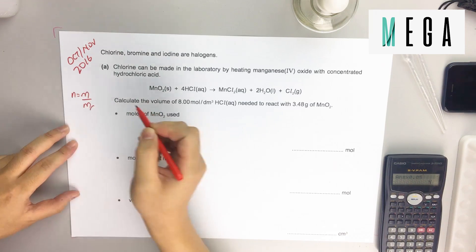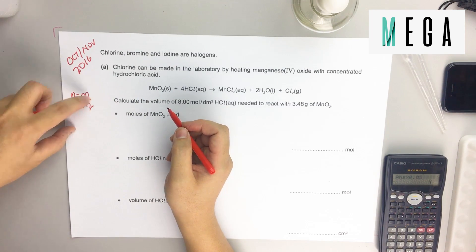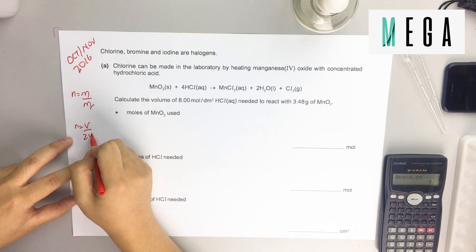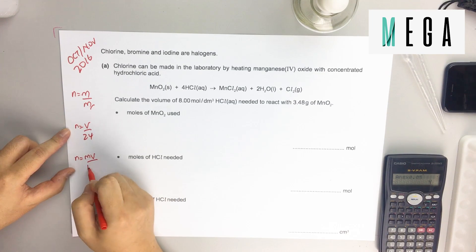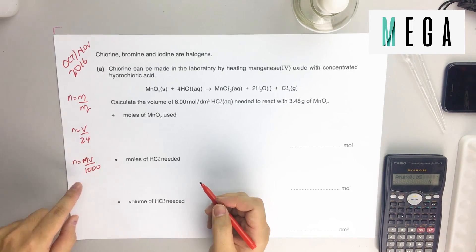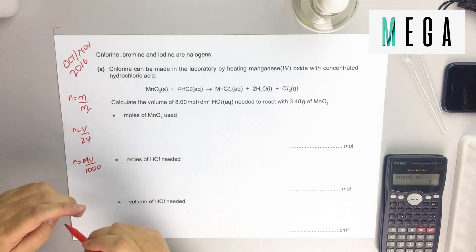Mass over molar mass equals the number of moles - whenever you have grams, use this. If it's a gas volume of gas, use this. Whenever you see concentration, you use this. Whenever you see mole per dm³, use this - make sure it's a capital M.